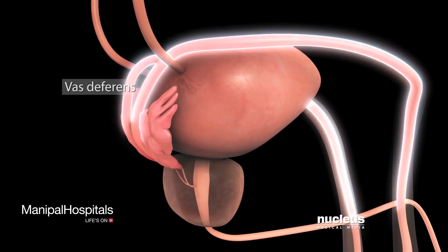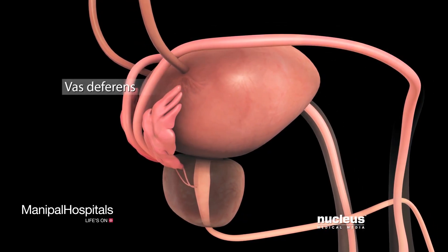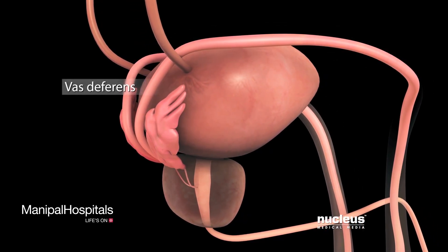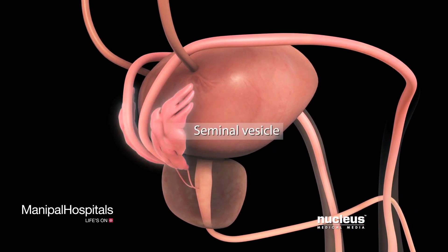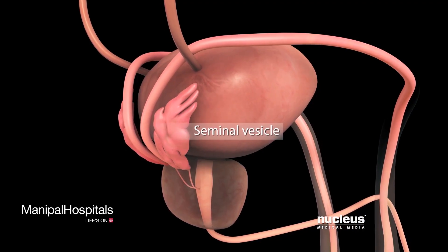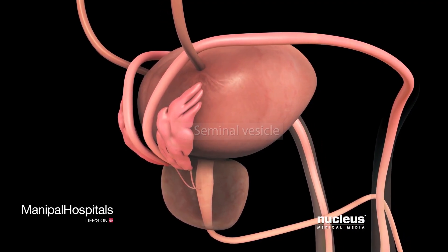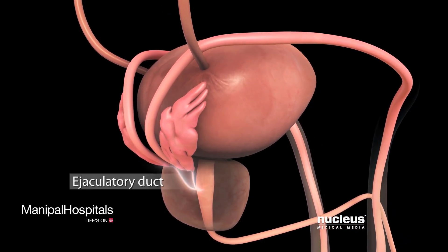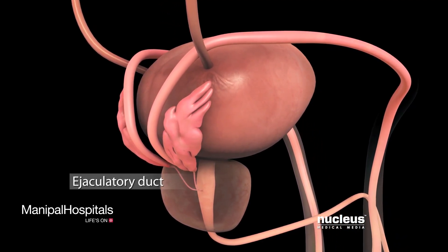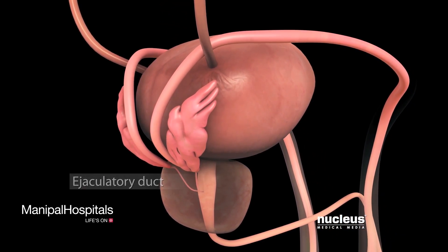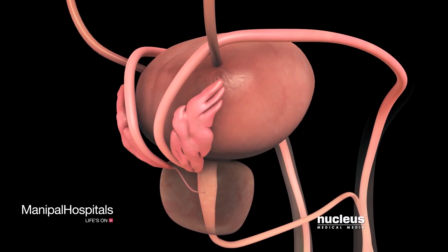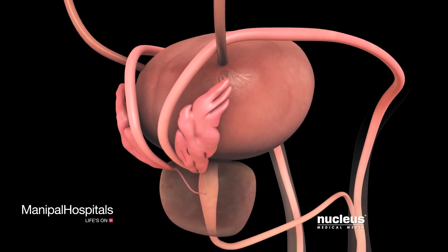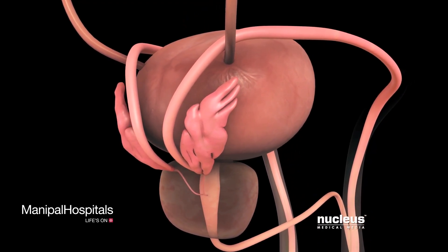Each of your vas deferens combines with a seminal vesicle to form an ejaculatory duct, which attaches to your prostate gland.